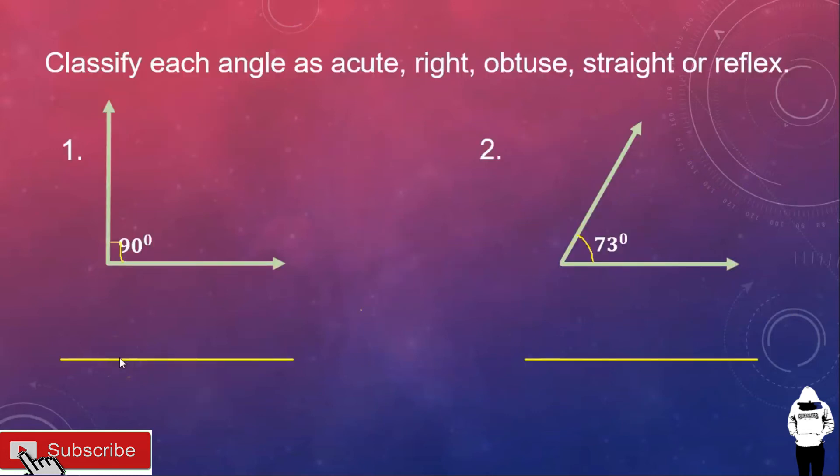Okay. Let's classify each angle as acute, right, obtuse, straight, or reflex. For number one, we have here, this angle measures exactly 90 degrees. So, this angle is right angle.